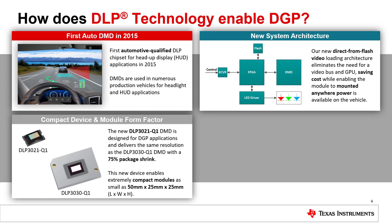The DLP 3021-Q1 DMD is driven by our new direct from flash system architecture. This new architecture allows pre-processed videos and images to be displayed without a video bus, meaning only power and ground need to be supplied to the module. This greatly reduces the integration complexity and cost for the dynamic ground projection system and enables the module to be virtually mounted anywhere on the vehicle.